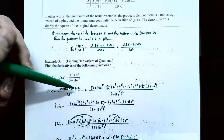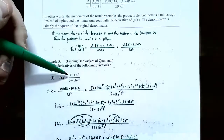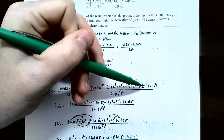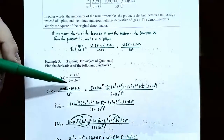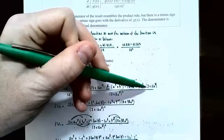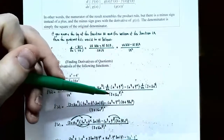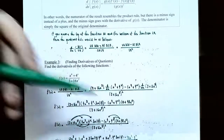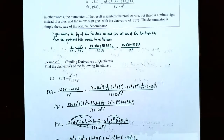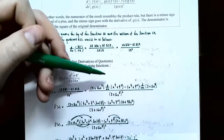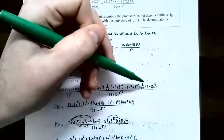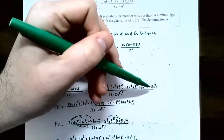Subtract high d low: the numerator x to the fourth plus 4 to the x, unchanged, times the derivative of low — the derivative of 3 plus 16x cubed — all divided by the denominator squared: 3 plus 16x cubed, all squared. We've plugged into the quotient rule, but now we need to find the individual derivatives. We need the derivative of x to the fourth plus 4 to the x, and the derivative of 3 plus 16x cubed.